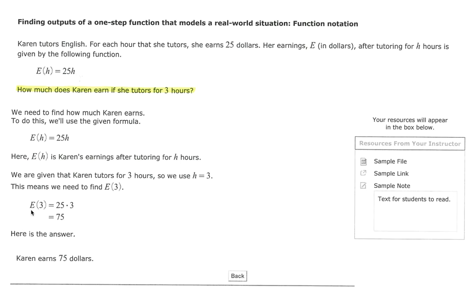So we evaluate the function by writing E of 3 equals 25 times 3, and 25 times 3 is 75. Therefore, we can conclude that Karen earns $75.